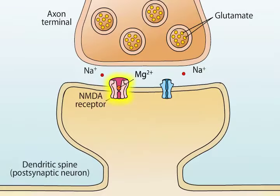The NMDA receptor is one of two main kinds of receptors activated by glutamate. The other main kind of glutamate receptor is called the AMPA receptor. These two receptors, each with distinct physiological properties, often coexist at the same synapse.